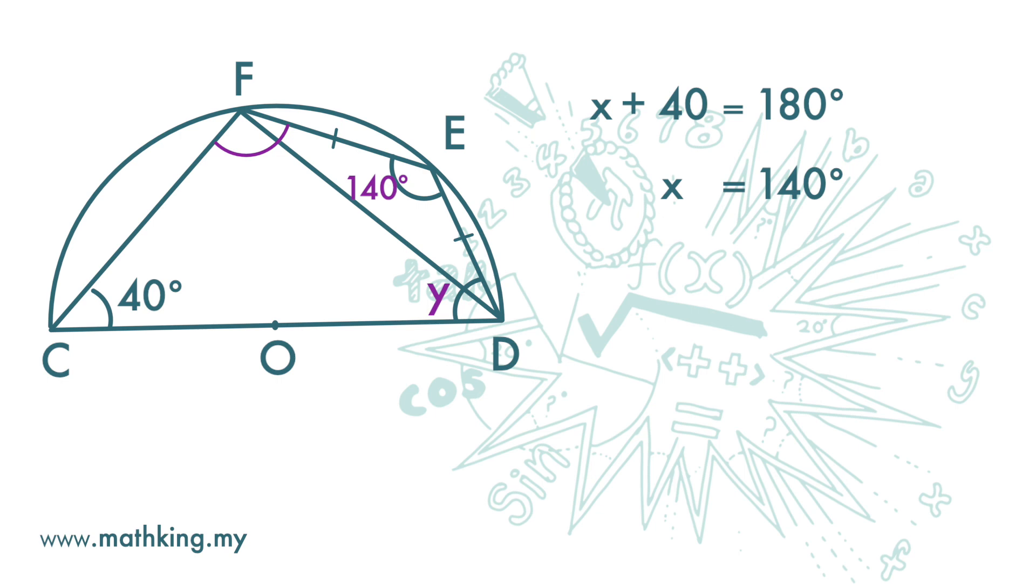The angle at F here is made up of two angles. This one and this one. This one is subtended by the diameter, and we have learned that it is 90 degrees.